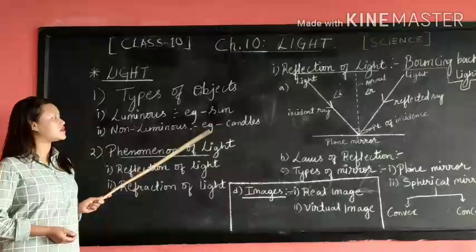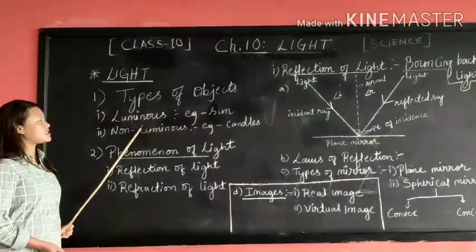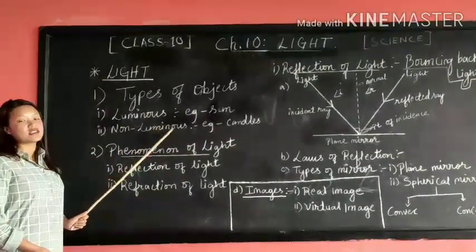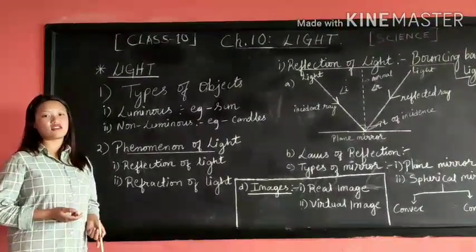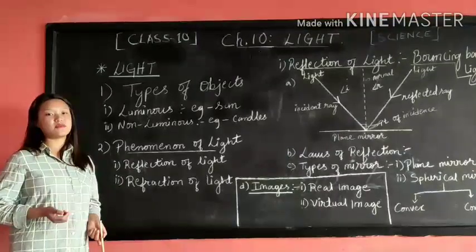Second one is non-luminous object. Non-luminous objects are the objects that do not emit their own light. They are known as man-made or artificial source of light. Example: candles.